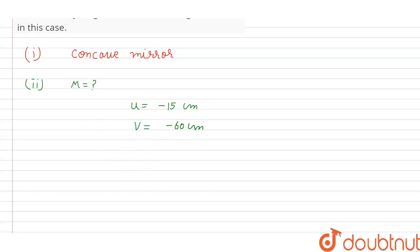We know that magnification M equals minus V divided by U. Minus V is minus 60 cm and U is minus 15, which gives minus 4.